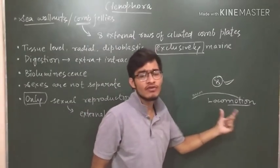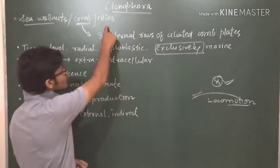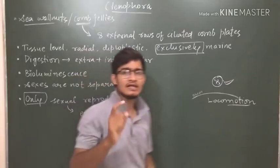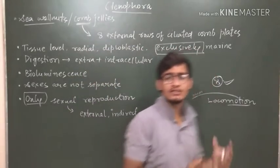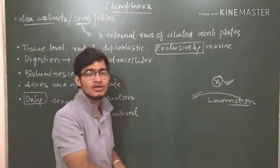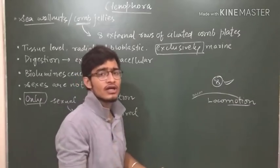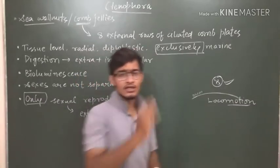This is the peculiar feature. So from the word comb jellies, you can learn a particular character that is ciliated comb plates which are eight in number, that are present on the external side and they can do the locomotion.